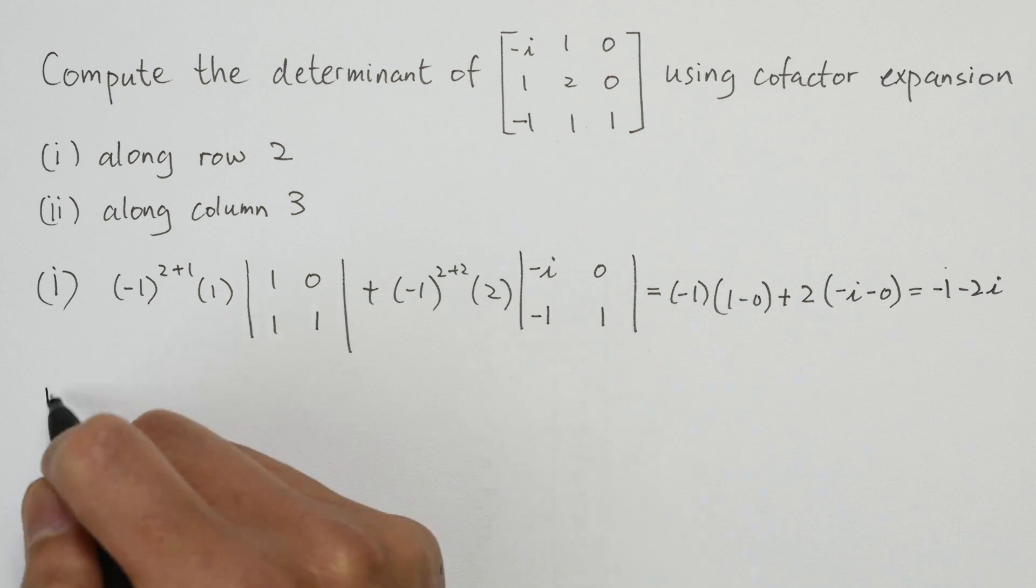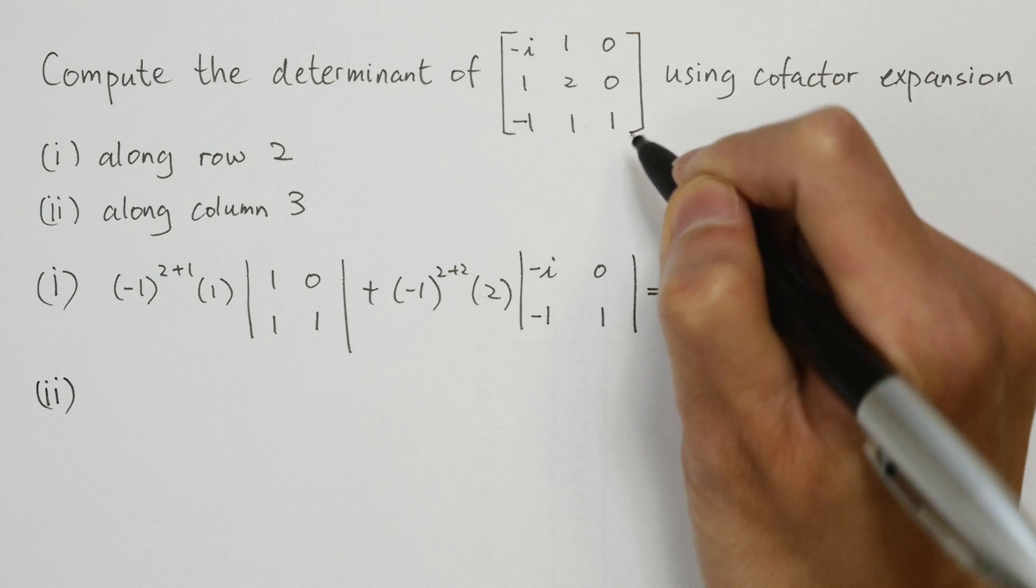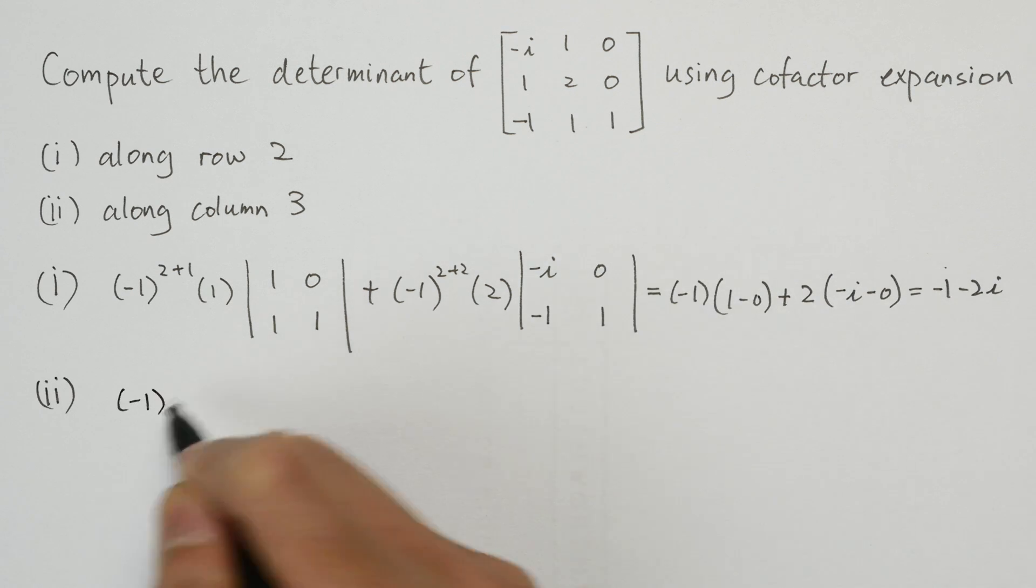We now expand the determinant along column 3. Notice that in the third column, only the third element is non-zero, so we have one non-zero term.